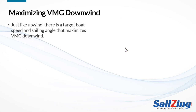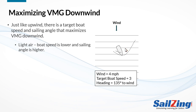Now let's talk about maximizing VMG downwind. Just like upwind, there's a target boat speed and sailing angle that maxes your VMG downwind. In light air, many boats sail very slowly if they head dead downwind. To compensate, we head up to gain speed — the extra speed more than compensates for the extra distance we sail. Using made up numbers, if the wind were 4 miles an hour, we might sail at a heading of 135 degrees to the wind to build up to a speed of 3 miles an hour. Boats that sail lower might point closer to the mark but make less progress because they are going slower. Boats that sail higher will go faster but will also make less progress.